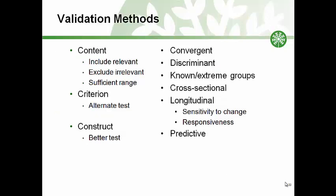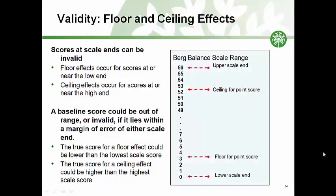Consequential aspects of validity have to do with the positive or negative and intentional or unintentional consequences of use of the measure. When discussing validity, we also need to think about floor and ceiling effects. The scale range is an important aspect of valid measurement; ideally we want scores that fall in the mid-range of the scale. Scores near the lower or higher ends — also called floor and ceiling — are not precise measurements. We show here the Berg Balance Scale with a margin of error of plus or minus 3.5 points. Consequently, the effective floor is at 3.5 points and the effective ceiling is 52.5 points; any score outside these ranges could represent a level of balance that is beyond the measurable scale.